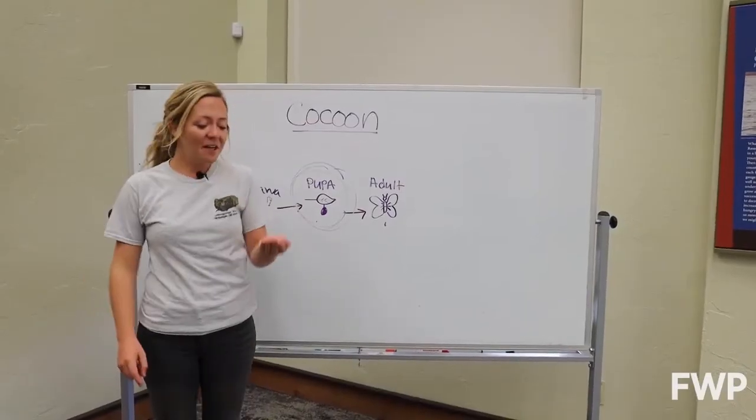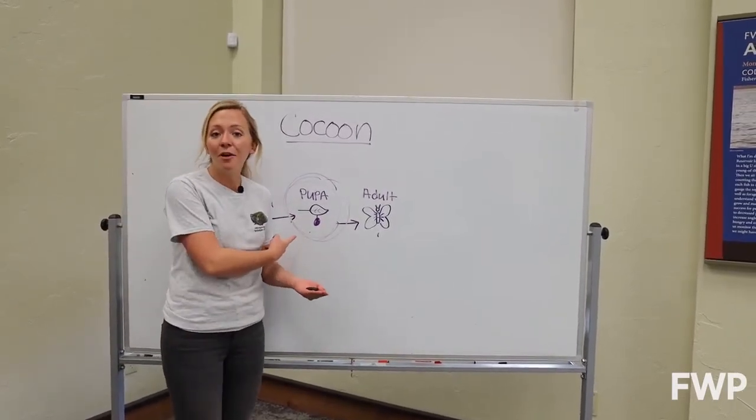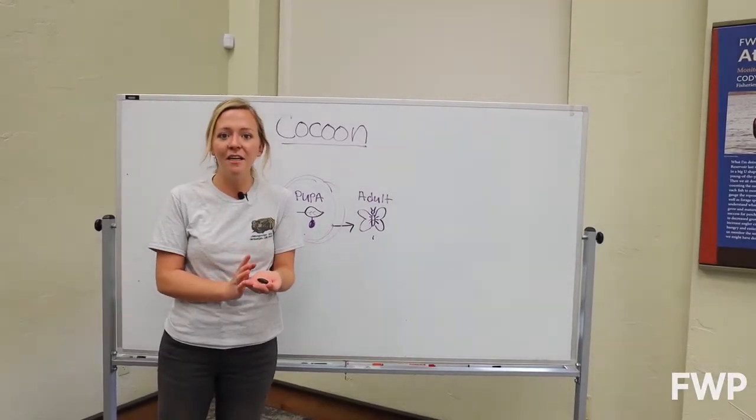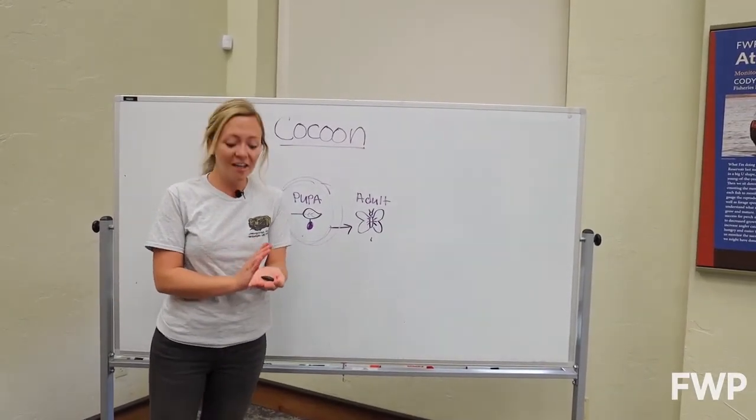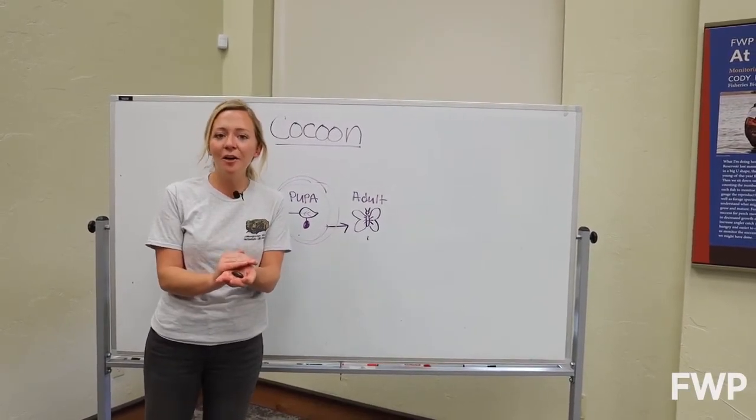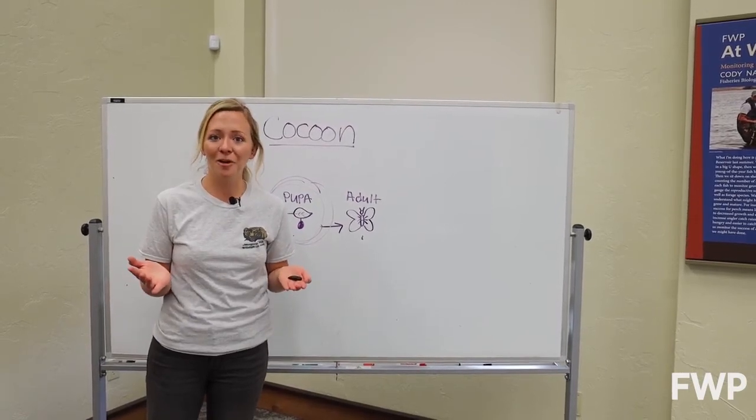So in conclusion, because I found this in the ground and not hanging from a leaf or a branch like a butterfly chrysalis would, and because it doesn't look like a silky covering or cocoon, I conclude that this is a pupa and if I go and bury it back in my garden it'll probably stay there all winter long and in the spring a moth should emerge.